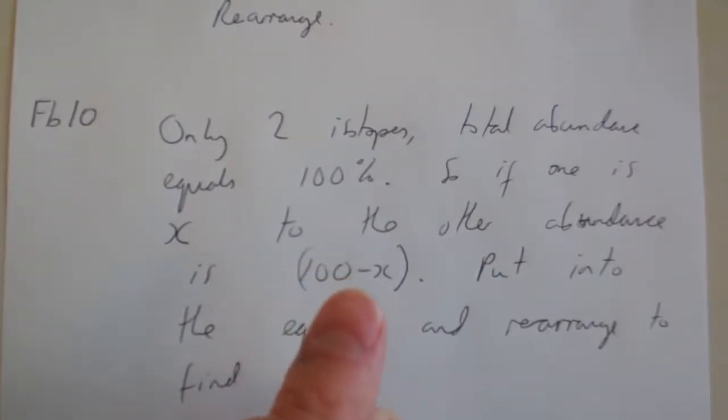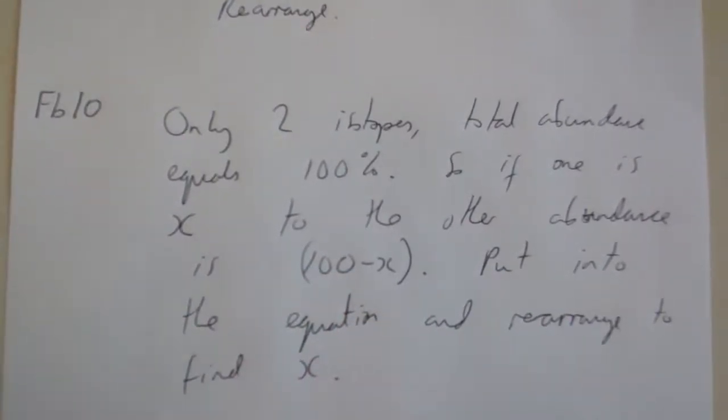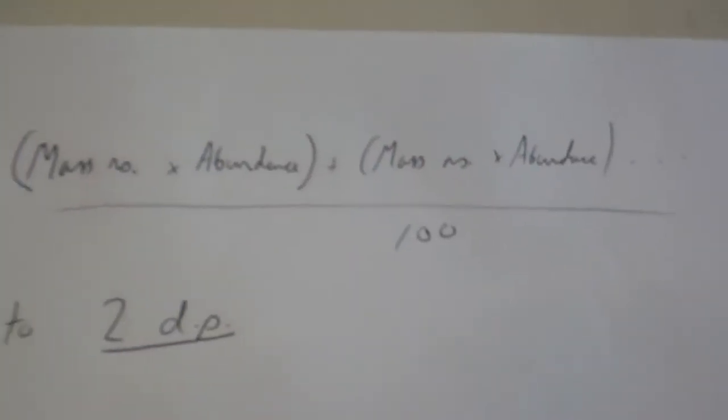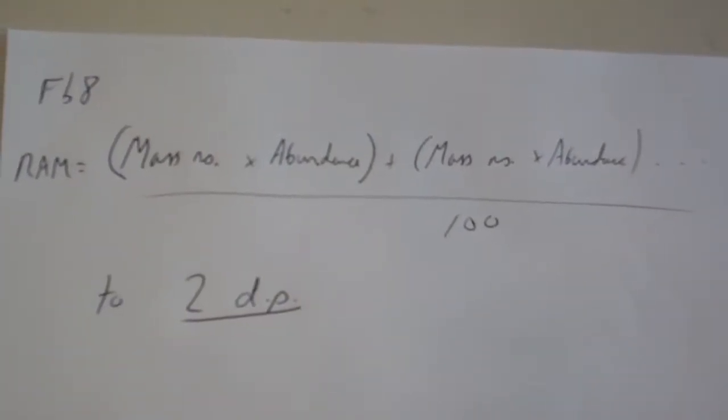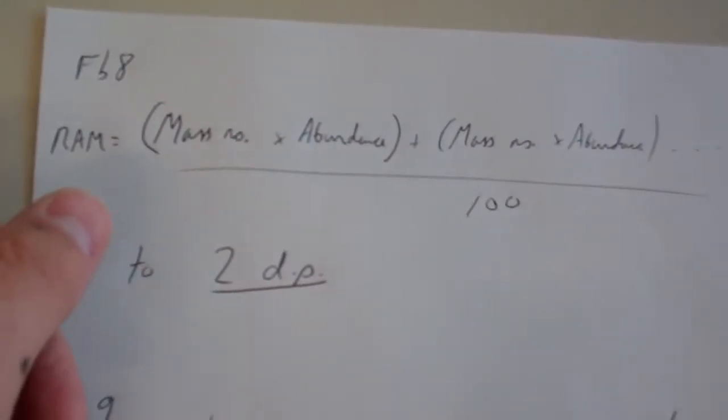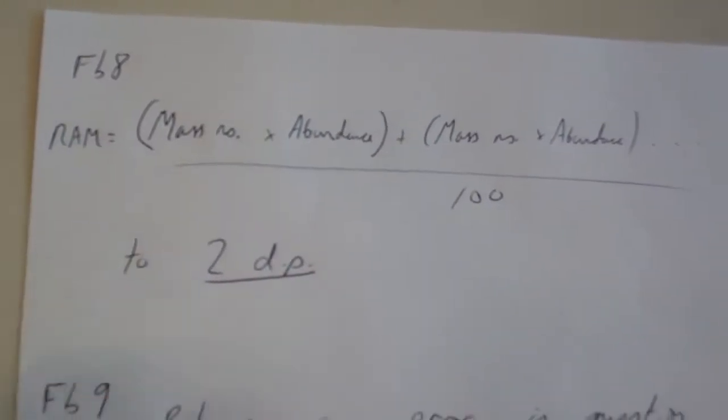So put x and a hundred minus x into your original equation, like the one that's similar to this one up here. You know the actual atomic mass this time though, and you're rearranging to find x.